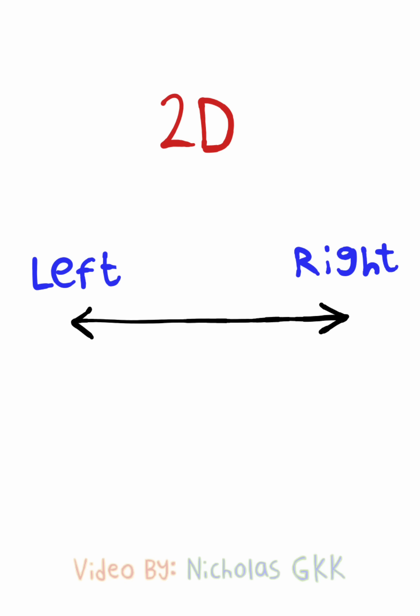Now we'll start by talking about the first dimension, which creates two directions for us, left and right. The second dimension creates four directions, left and right, up and down.